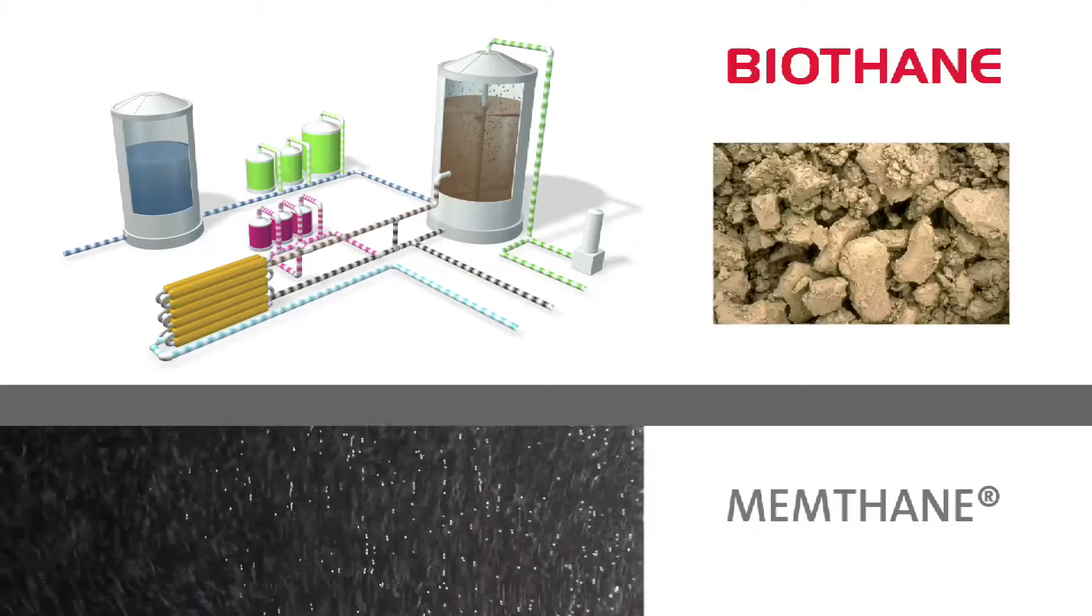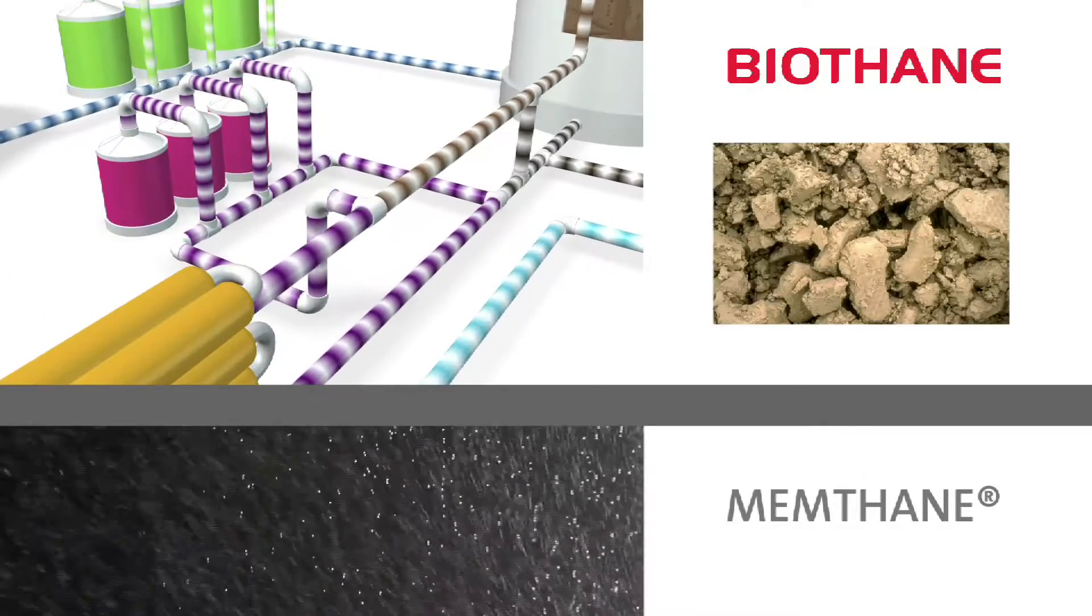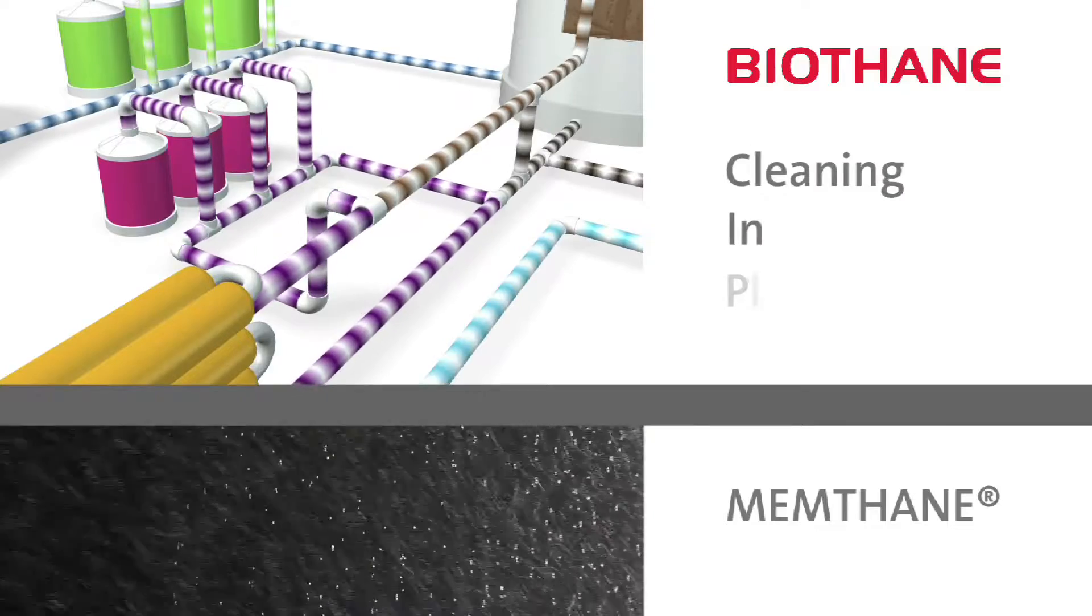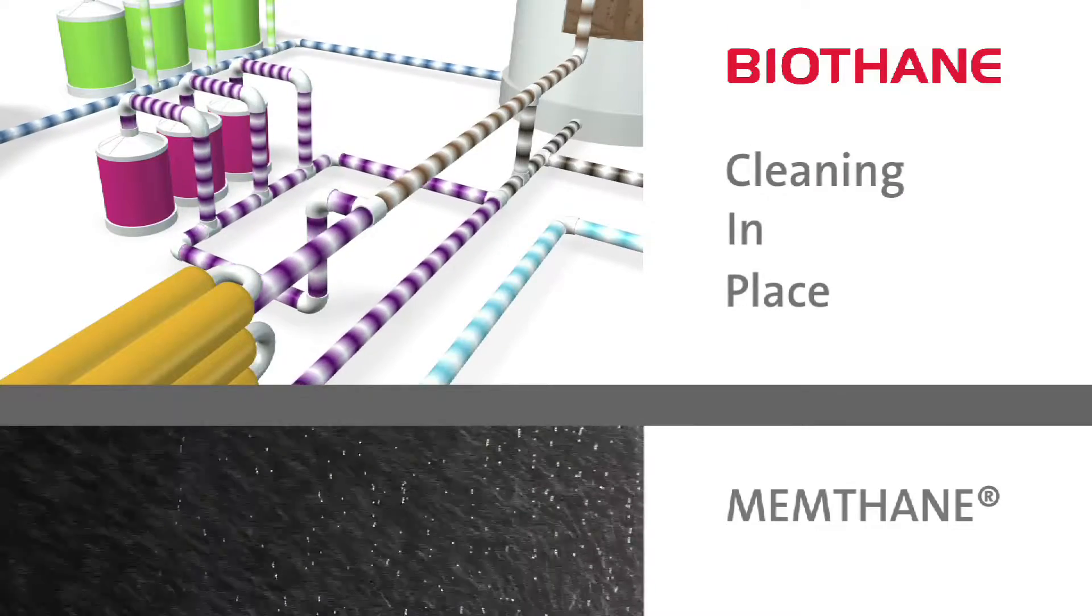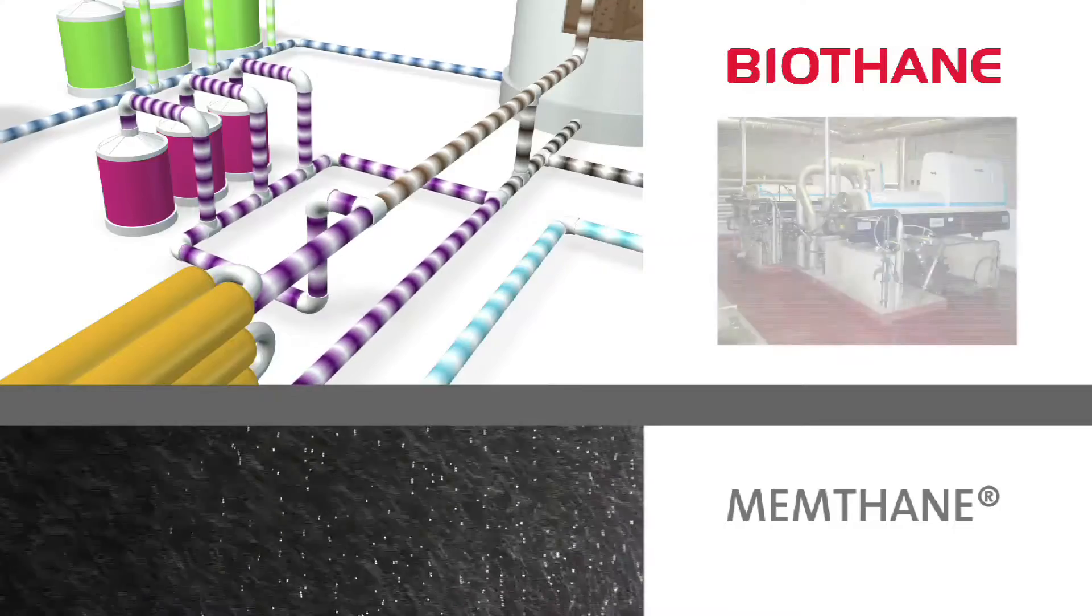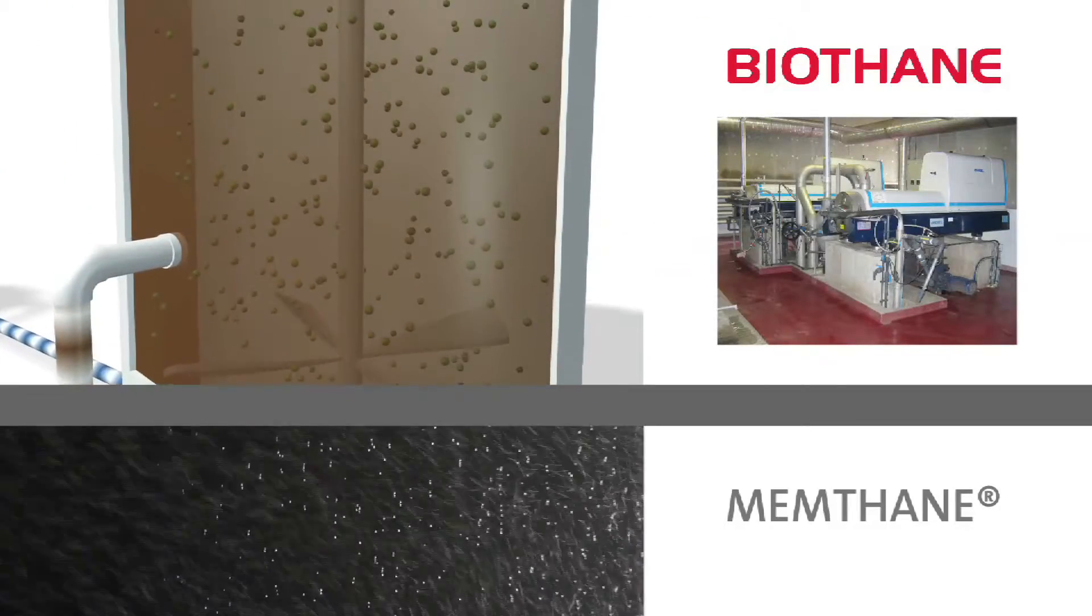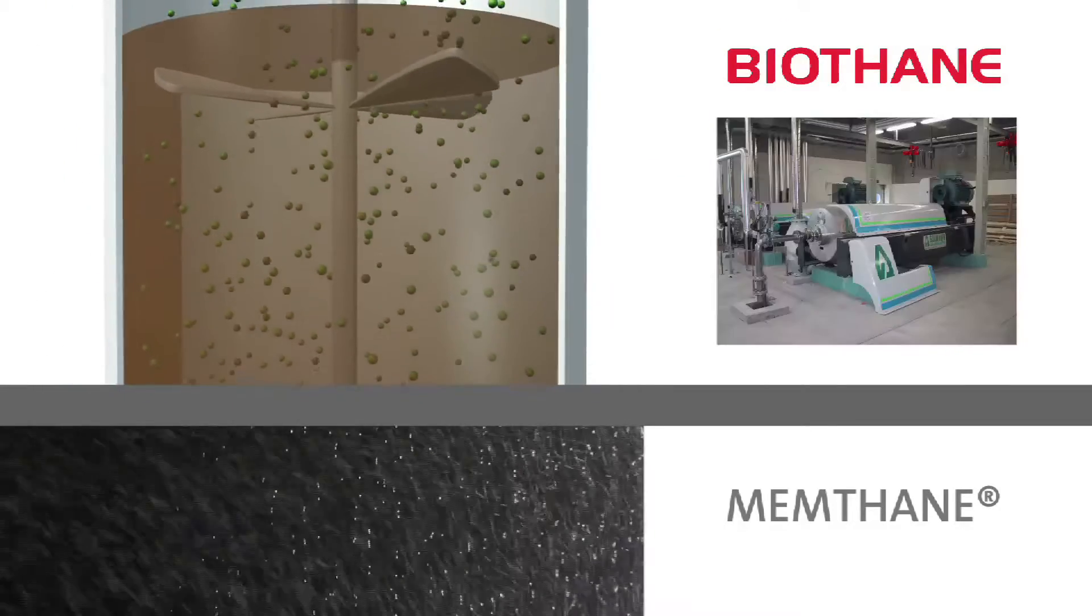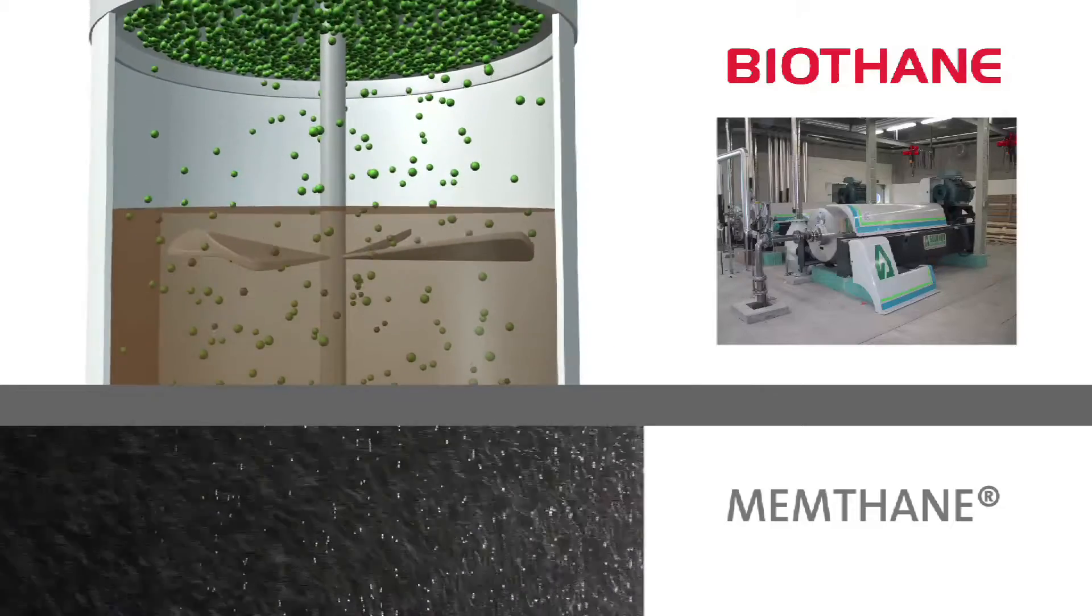The Memthane technology uses tubular UF membranes placed outside the reactor which enables easy maintenance. Memthane patents are related to the mixing of the reactor and the selective removal of inorganic solids.